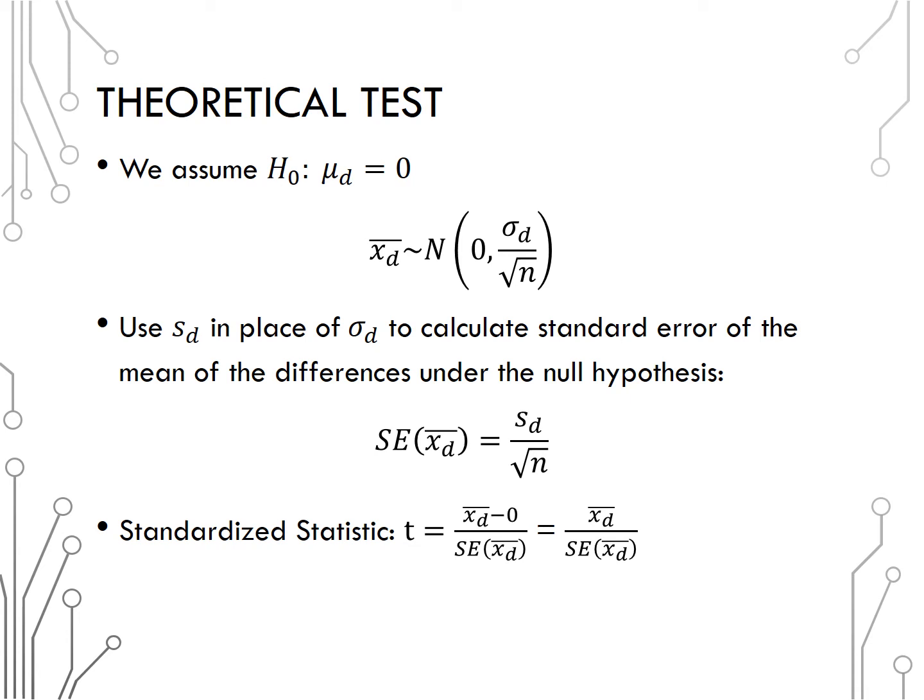We will use S sub d, or the sample standard deviation of the differences, in place of the population standard deviation of the differences. That means we are calculating standard error of the mean of the differences under the null hypothesis, and that standard error formula is S sub d over the square root of n.